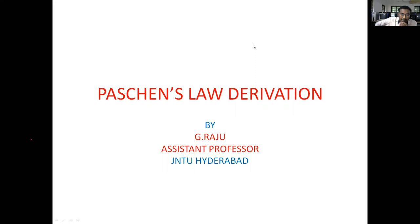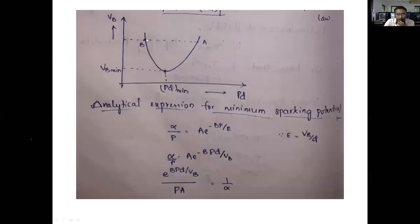Coming to the next concept called Paschen's Law derivation. In this Paschen's Law derivation, we are finding the breakdown voltage. By using Paschen's curve, we are finding the minimum breakdown voltage, that is called VB minimum. With the minimum, we are finding by using Paschen's curve the PD minimum — the breakdown at which PD minimum we are finding.